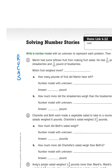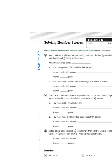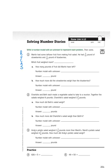It says write a number model with an unknown to represent each problem, then solve. So I'm going to come up with a number model with an unknown. First I need to figure out what's my number model. So let's read.